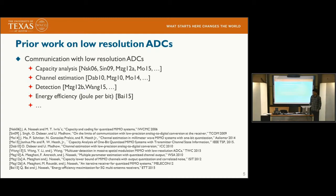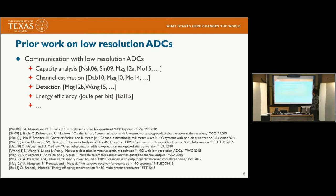For a one-bit ADC, you only need one comparator, so it's very simple to produce. We can also simplify hardware design — for example, we do not need automatic gain control (AGC) anymore. There is prior work on low-resolution ADCs covering capacity analysis, like Professor Norsak's work, as well as channel estimation, detection, and energy efficiency.